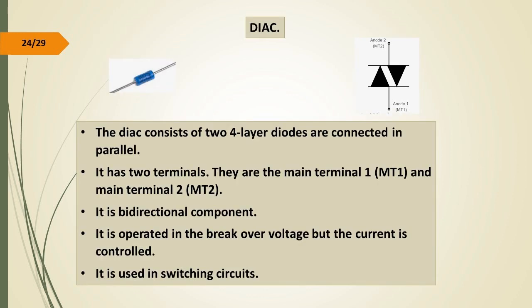DIAC. The DIAC consists of four layers with a diode connected in parallel but in opposite direction. It has two terminals: main terminal 1 (MT1) and main terminal 2 (MT2). It is a bidirectional component, operated in the break-over voltage region where current is controlled. It is used in switching circuits.